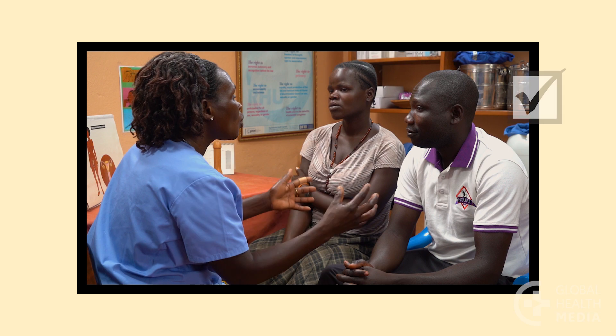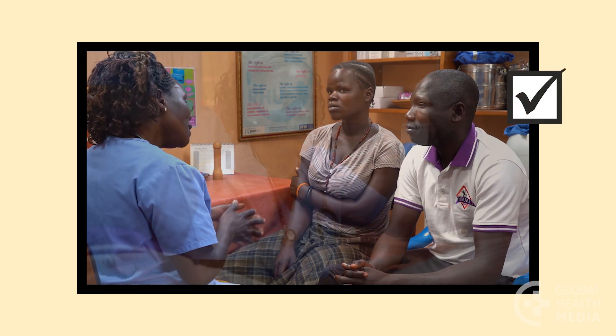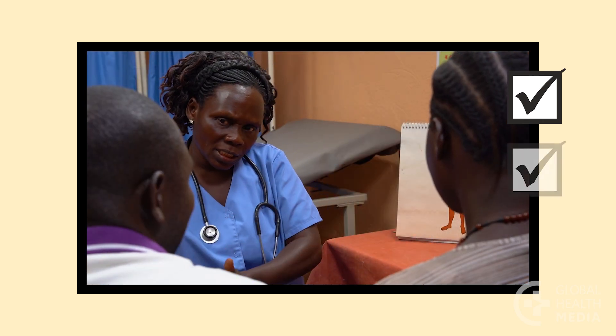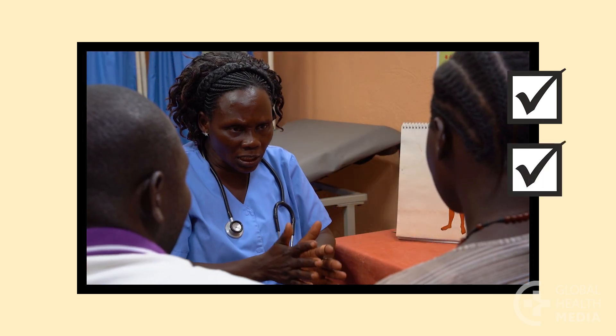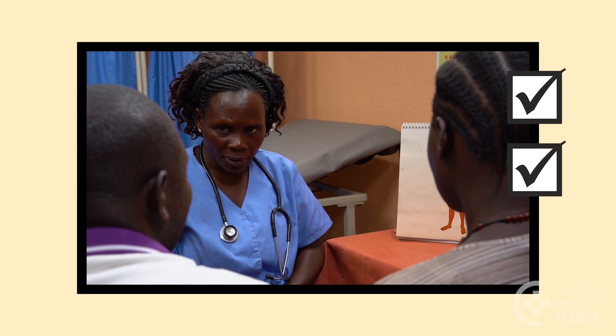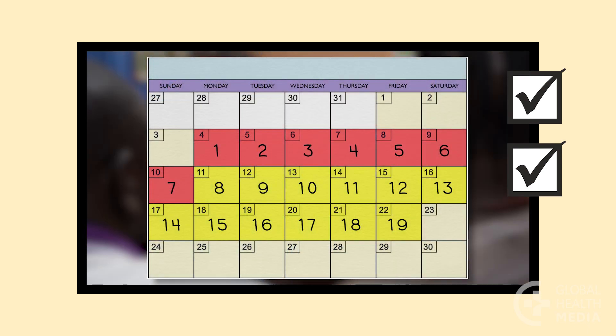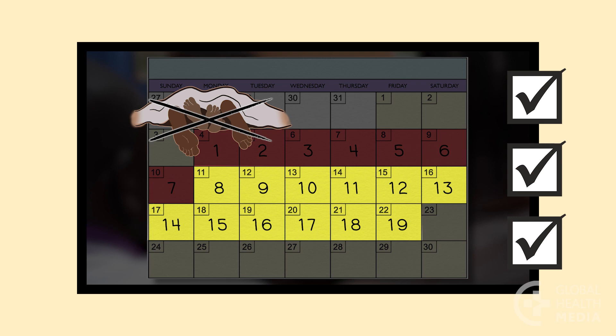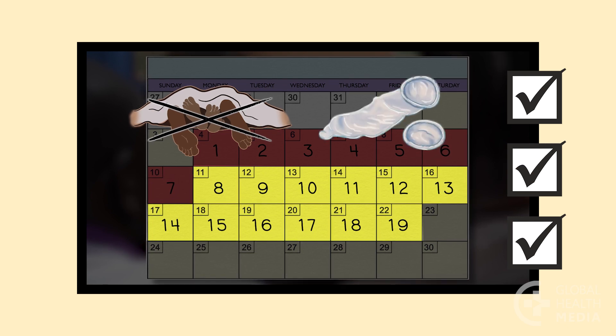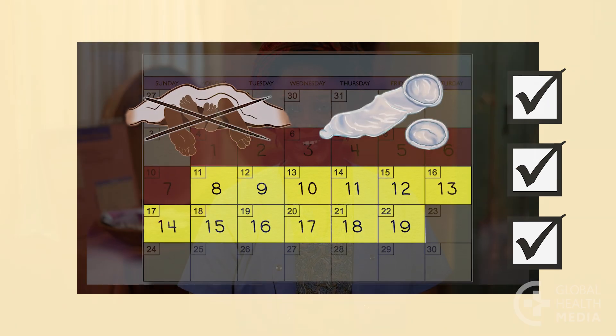Keep these points in mind: for the calendar method to work you need a cooperative partner, a regular bleeding cycle between 26 and 32 days, and you need to avoid sex or use condoms on your fertile days. Learn all you can about your contraceptive method so you feel confident and safe, and become pregnant only if and when you want to. You're worth it.